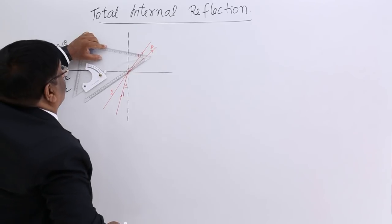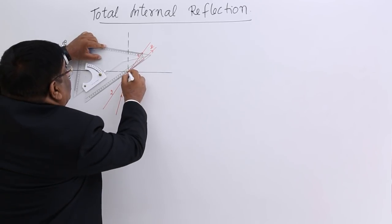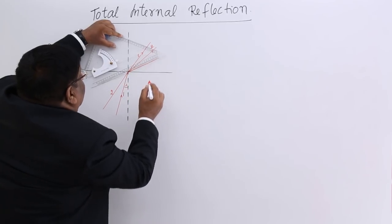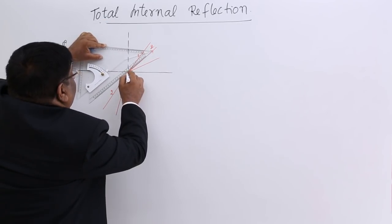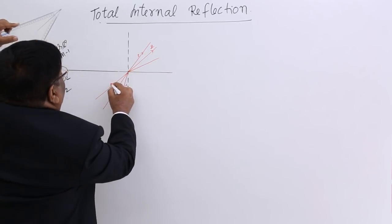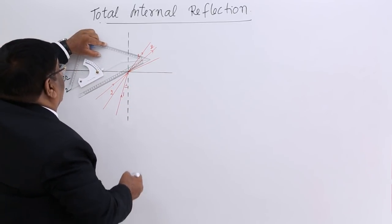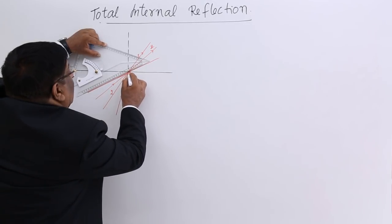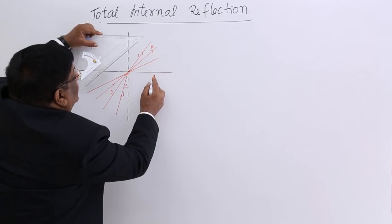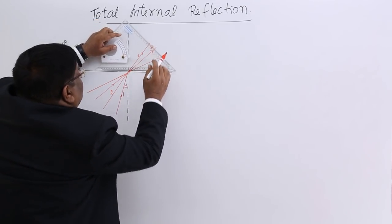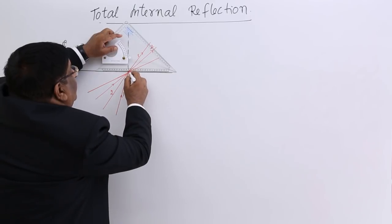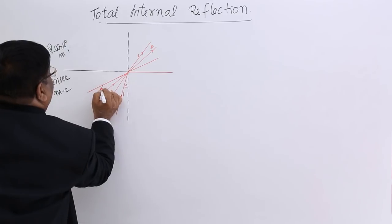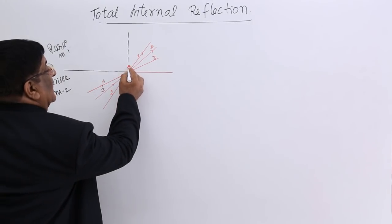Similarly, ray number 3 bends more and goes further. Ray number 4 bends even more — so much that it reaches this surface. This is ray number 4, and now this angle of refraction has increased significantly.